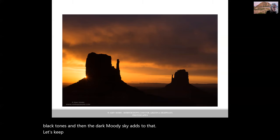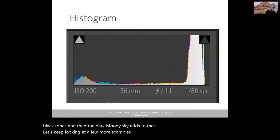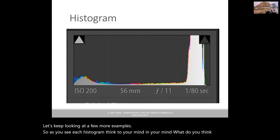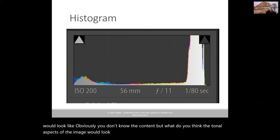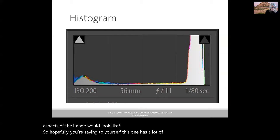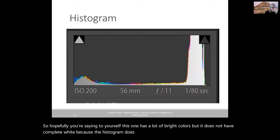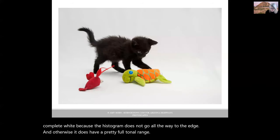Let's keep looking at a few more examples. As you see each histogram, think in your mind, what do you think this image would look like? Obviously, you don't know the content, but what do you think the tonal aspects of the image would look like? Hopefully you're saying to yourself, this one has a lot of bright colors, but it does not have complete white because the histogram does not go all the way to the edge. And otherwise, it does have a pretty full tonal range.